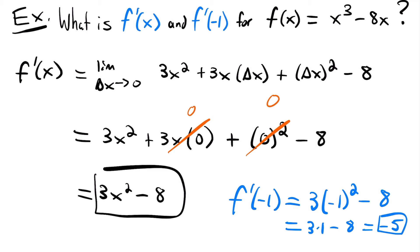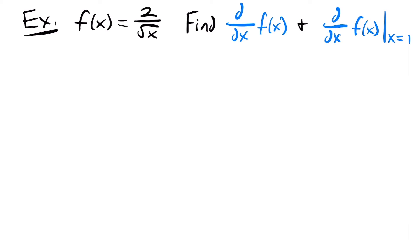That was a lot of work, but I have one more example. Our function is 2 divided by the square root of x, and we want to find the derivative and its value at x equals 1. When you're asked to evaluate a derivative at a specific value, it's written in a special notation. Let's go through finding the derivative using the limit definition.